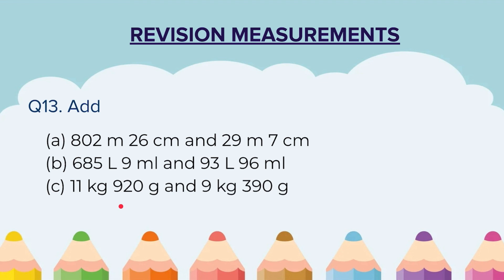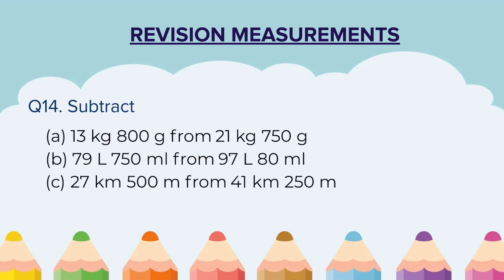Question 13: Add — A) 802 meters 26 centimeters and 29 meters 7 centimeters, B) 685 liters 9 milliliters and 93 liters 96 milliliters, C) 11 kg 920 grams and 9 kg 390 grams. Be careful: in centimeters the second number should have 2 digits, in milliliters it should have 3 places, and in grams it should also be 3 places. Only then start adding.